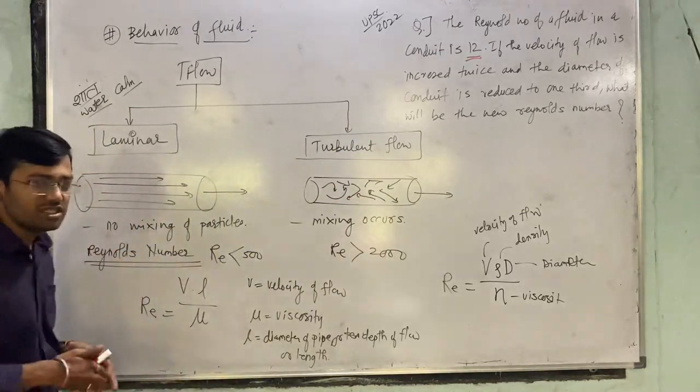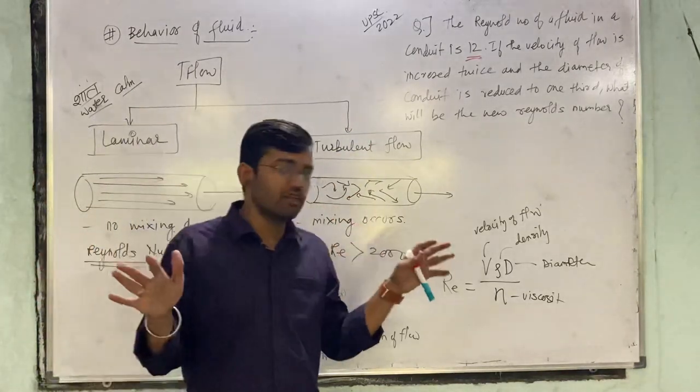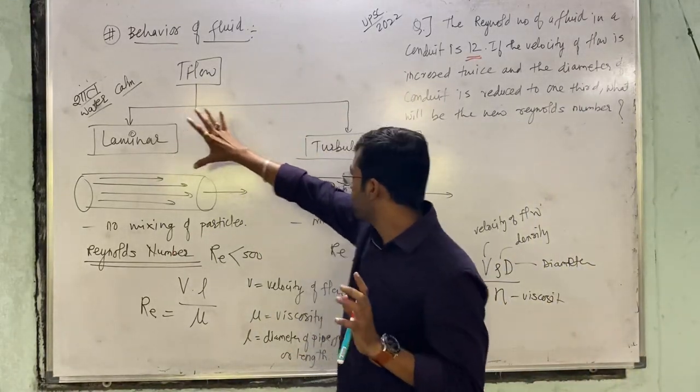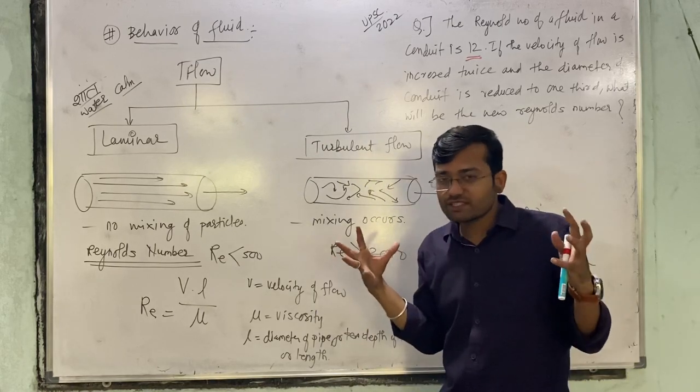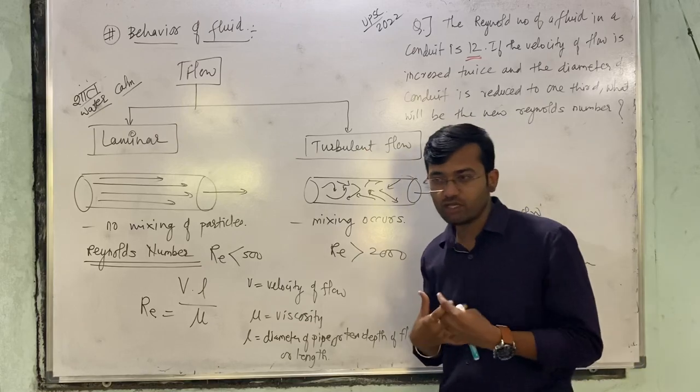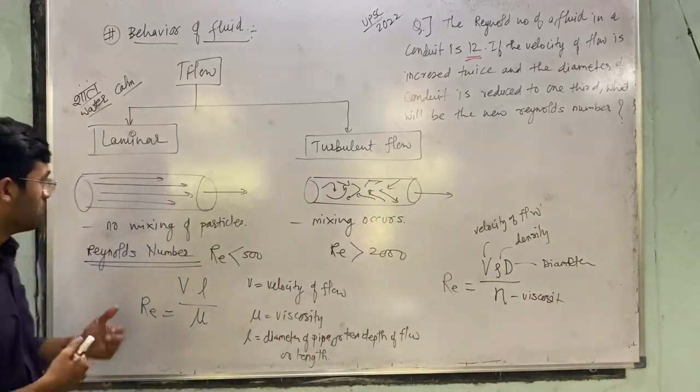Laminar means what? Shanti, calm water basically. And turbulent flow, you can say, water with a lot of sound and turbulence, moving here and there. Like that, you can remember.